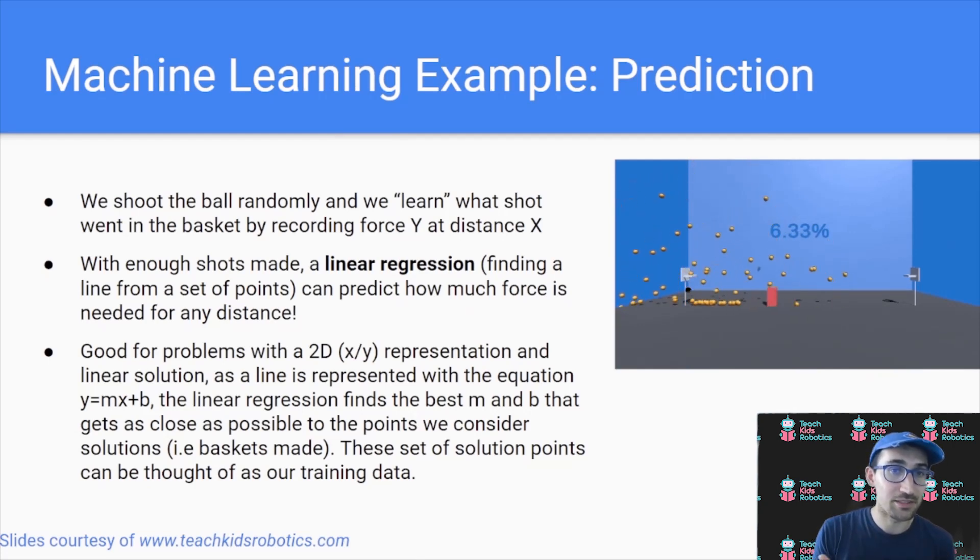When we have enough of these points, basically force and distance, when we have enough of these shots made, we use this linear regression technique finding a line from a set of points in order to find the line that will tell us for any distance x exactly what the force y is.